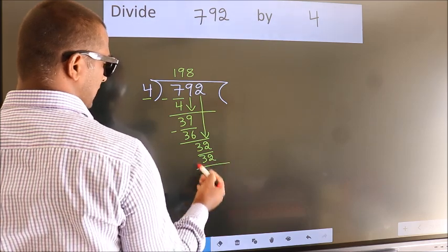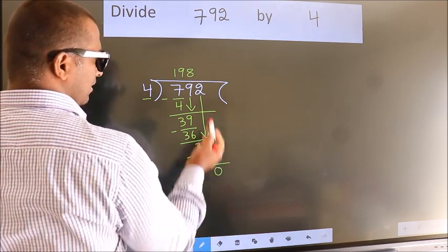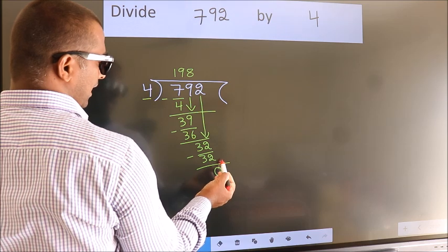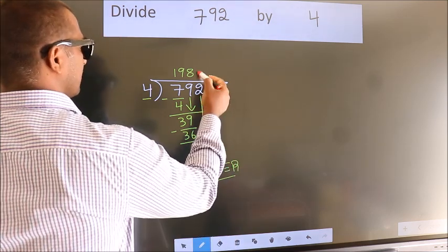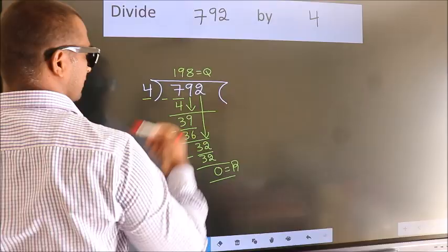Now we subtract. We get 0. No more numbers to bring it down. So we stop here. This is our remainder. This is our quotient.